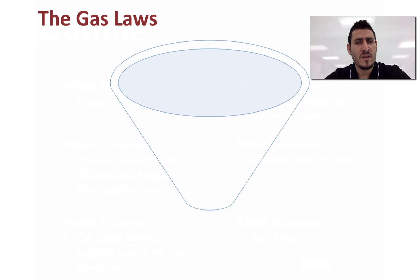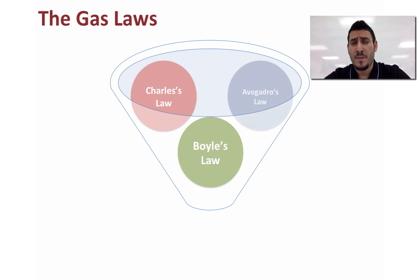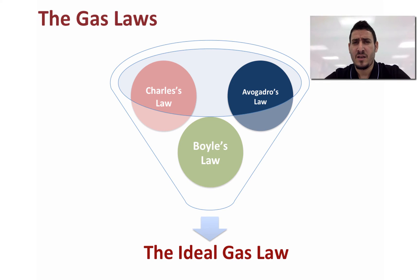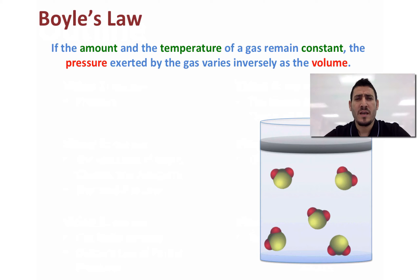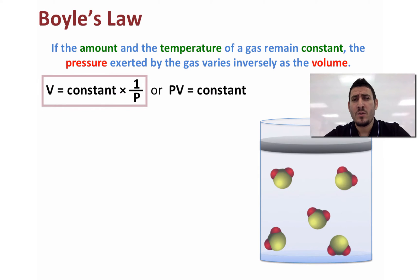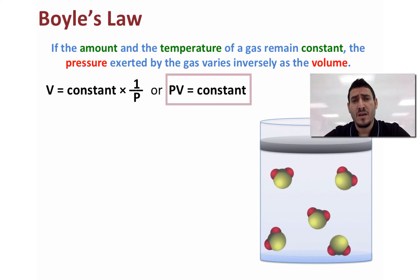Before we discuss the ideal gas law, we are going to discuss Boyle's law, Charles' law, and Avogadro's law, which will help us better understand the ideal gas law. Boyle said if the amount and the temperature of a gas remain constant, the pressure exerted by the gas varies inversely as the volume, which means volume equals a constant multiplied by one over pressure, or pressure times volume equals a constant.